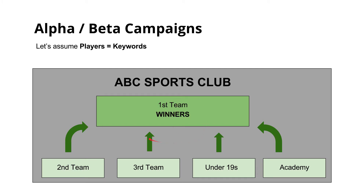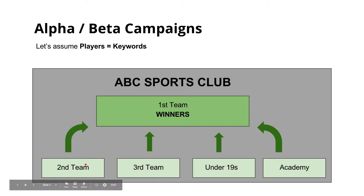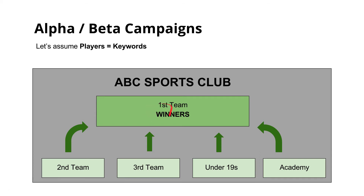So I hope you start to understand the structure of why we want to isolate the best keywords into their own campaign, but we can't afford to stop running the other ones just because they are not the best. We need to keep looking. We need to keep running these campaigns as well, which will start to give us better keywords and players and push them into our first team.